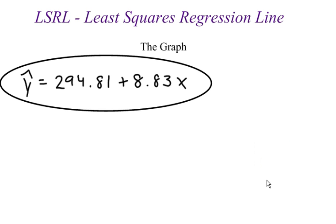All right, so we found this least squared regression line. If you are watching this video, you probably need to watch the previous one if you haven't. I found a least squared regression line for some data before, and it was y hat equals 294.81 plus 8.83x. And we want to graph it.